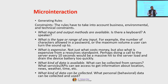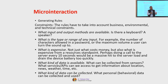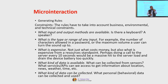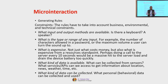What is expensive? Not just what costs money, but also what is expensive from a resources standpoint. Perhaps doing a call to the server every 10 seconds would be a massive hit to the server load and drain the device battery too quickly. Then what kind of data is available? What can be collected from sensors? What services or APIs can we access to get information about location, news, weather, time, etcetera? What kind of data can be collected? What personal behavioral data can be collected and used? These are crucial pieces of information that define how these rules are being designed or generated.